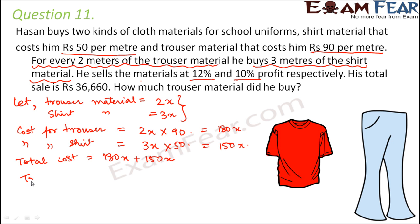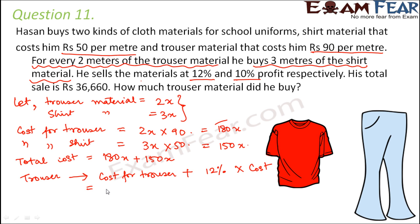For the trouser, the profit was 12%. So the selling price for trouser is 180x plus 12% of 180x, which is 180x plus (12/100) × 180x. This is the price at which the trouser was sold by him.